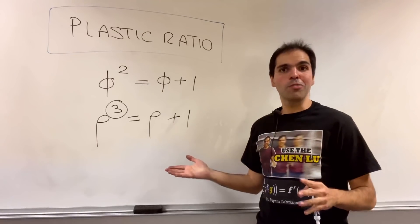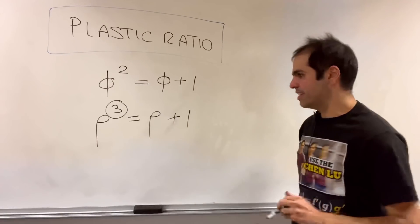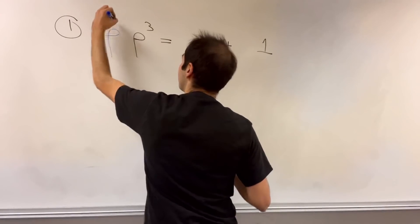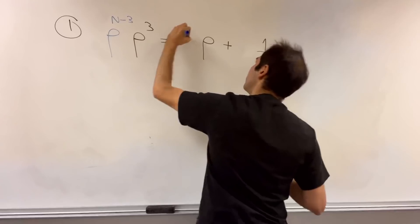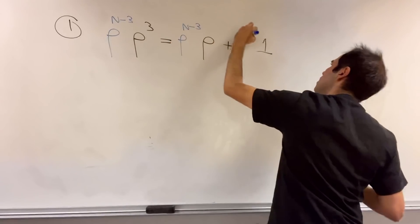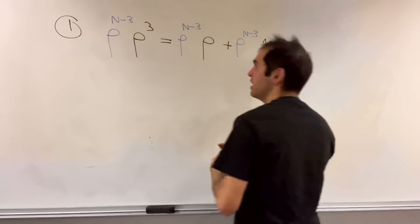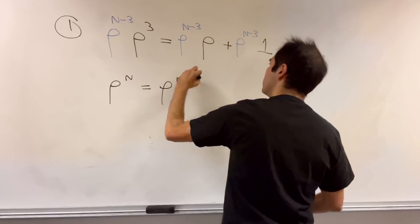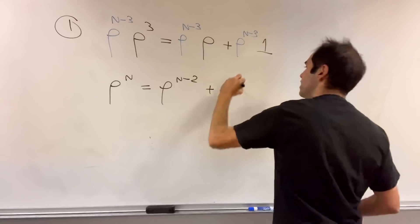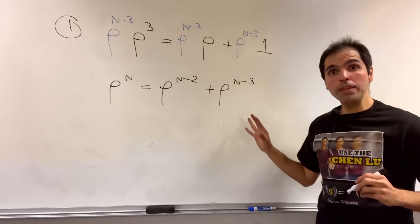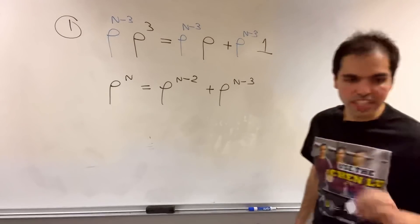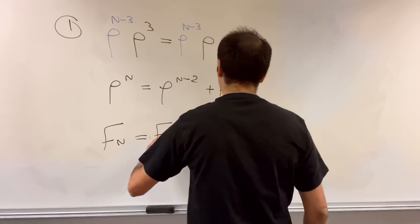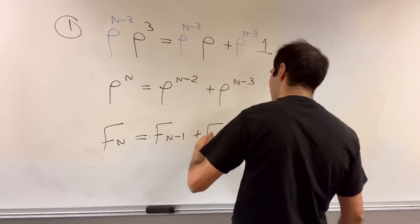And in fact, they do have similar properties, which I want to talk about now, because if you start with this equation and multiply it by rho to the n minus three on all sides, then what you get is rho to the n equals rho to the n minus two plus rho to the n minus three, which should be compared to the Fibonacci sequence that tells you that fn equals fn minus one plus fn minus two.